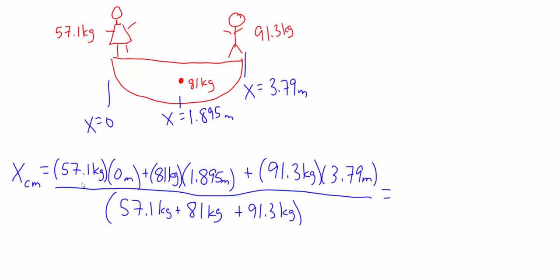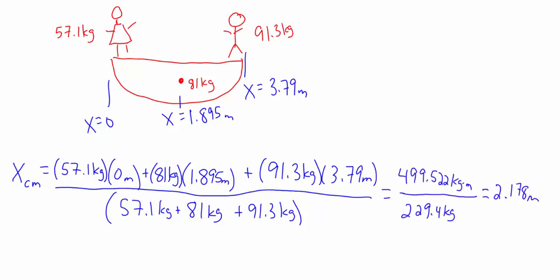We have the mass of Juliet, 57.1 kilograms, times her position, zero meters, plus 81 kilograms for the boat times 1.895 meters — that's where we consider all the mass of the boat to be located — and then Romeo, 91.3 kilograms times his position, 3.79 meters, divided by the total mass. The numerator gives 499.522 kilogram·meters, and the denominator — the total mass — is 229.4 kilograms. This gives us an x-coordinate of the center of mass of 2.178 meters. Because Romeo is more massive than Juliet, the center of mass is closer to Romeo than to Juliet.